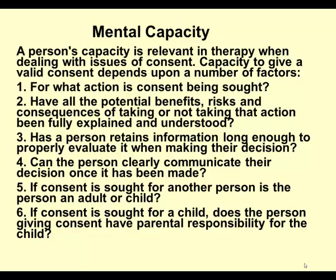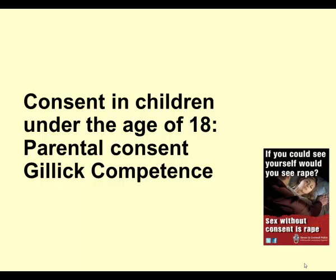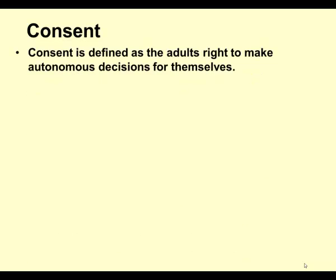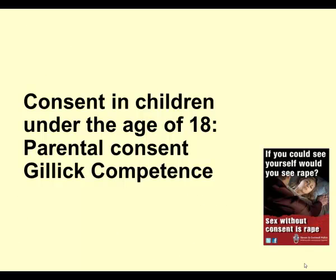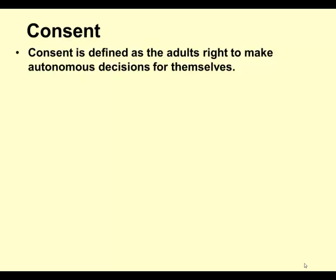If consent is sought for a child, does the person giving consent have parental responsibility for the child? That is a particular legal term. We're going to look at parental consent and Gillick competence for children under the age of 18. Consent is the capacity to make decisions. Capacity and consent are two separate concepts: capacity is the ability to make the decision, while consent is actually making that decision — making autonomous decisions for themselves.